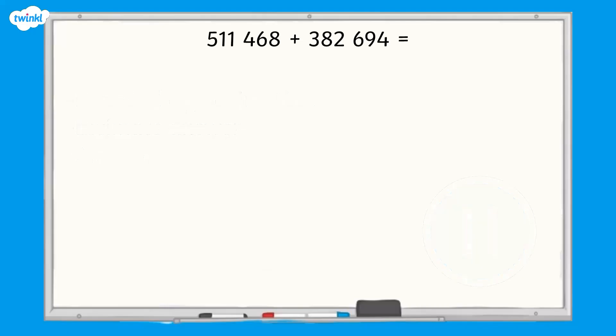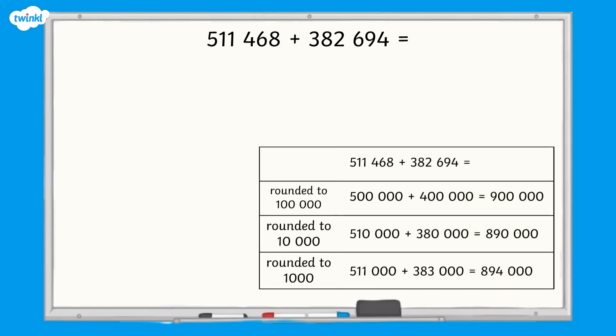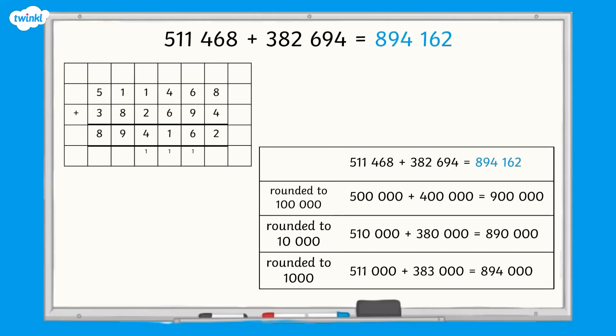How did you get on? Which approximation did you use? What was your estimate? 511,468 add 382,694 equals 894,162.